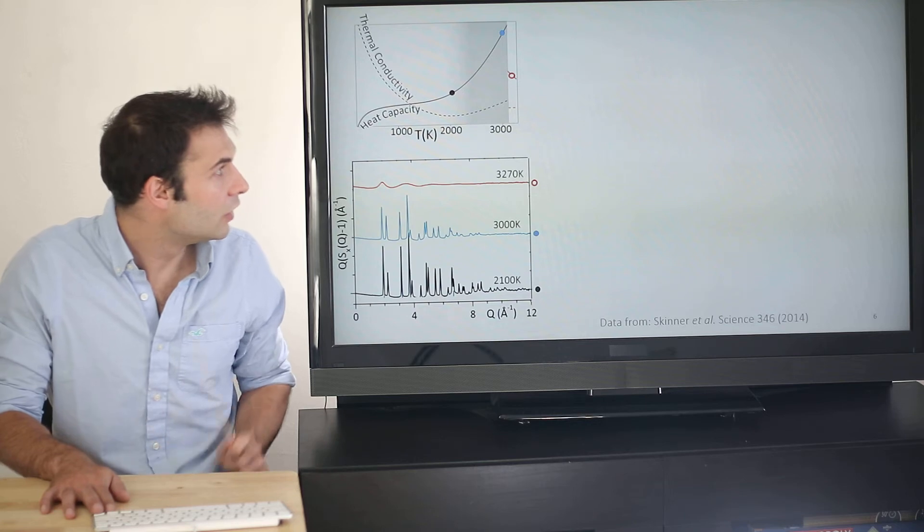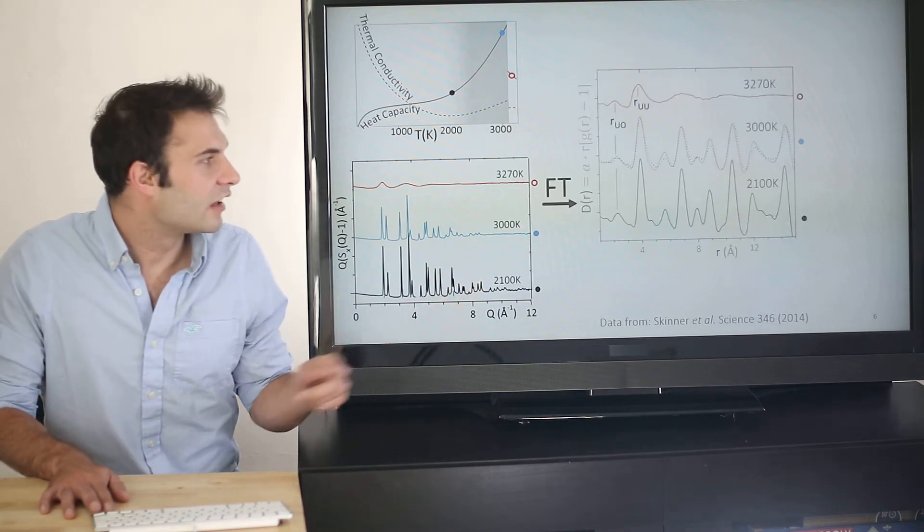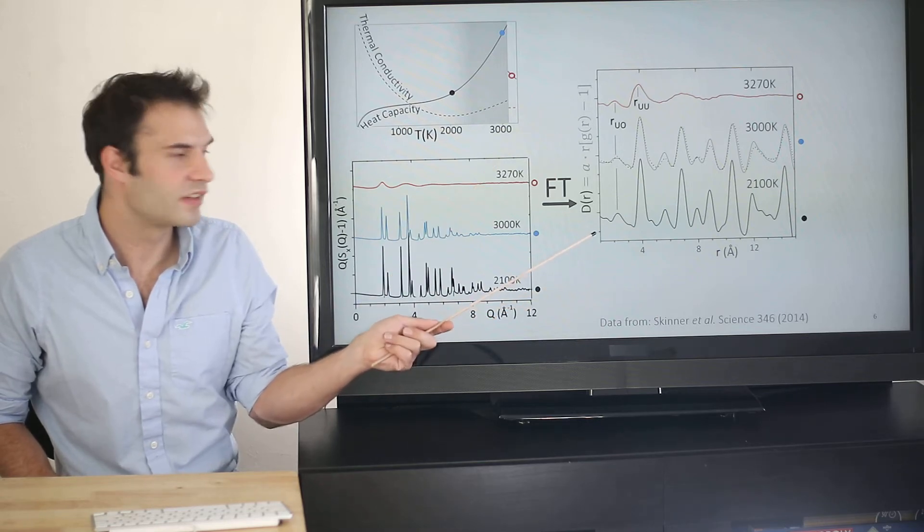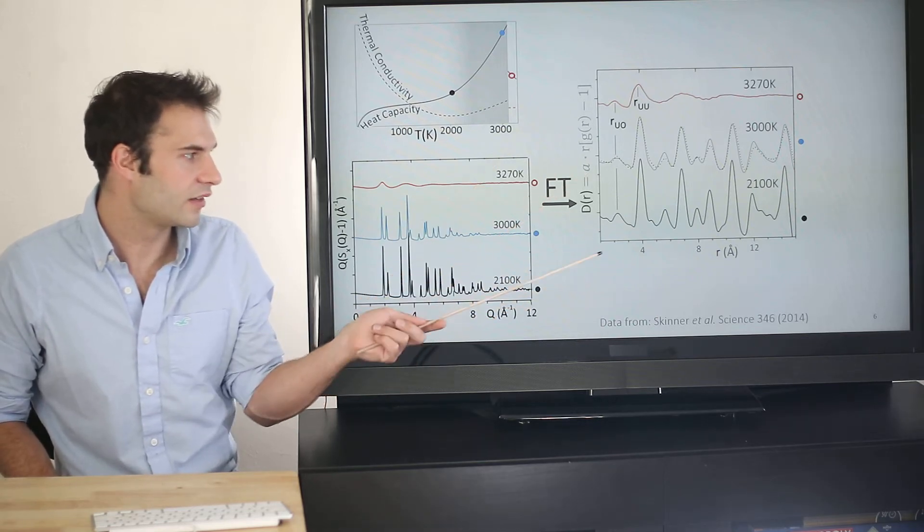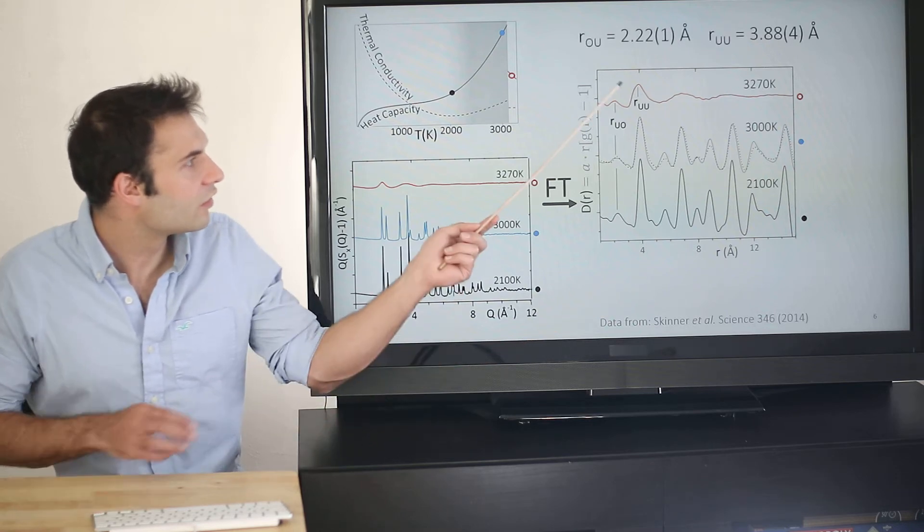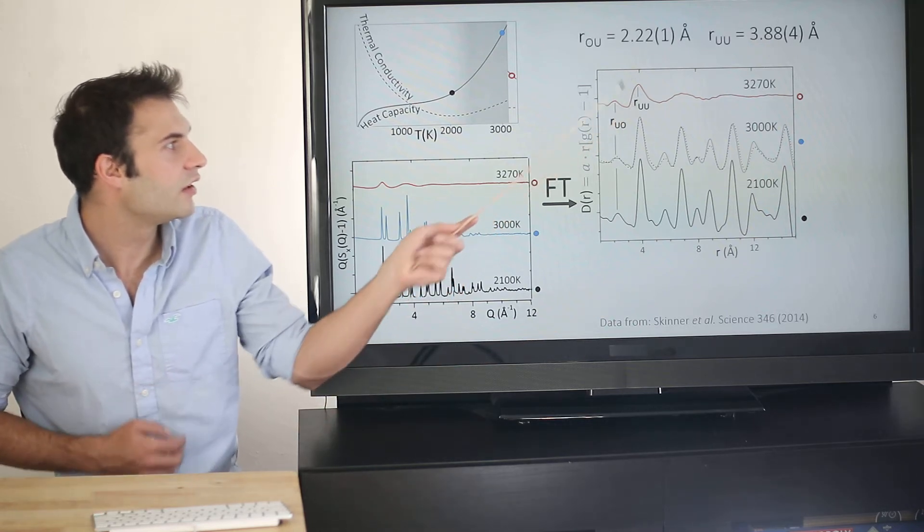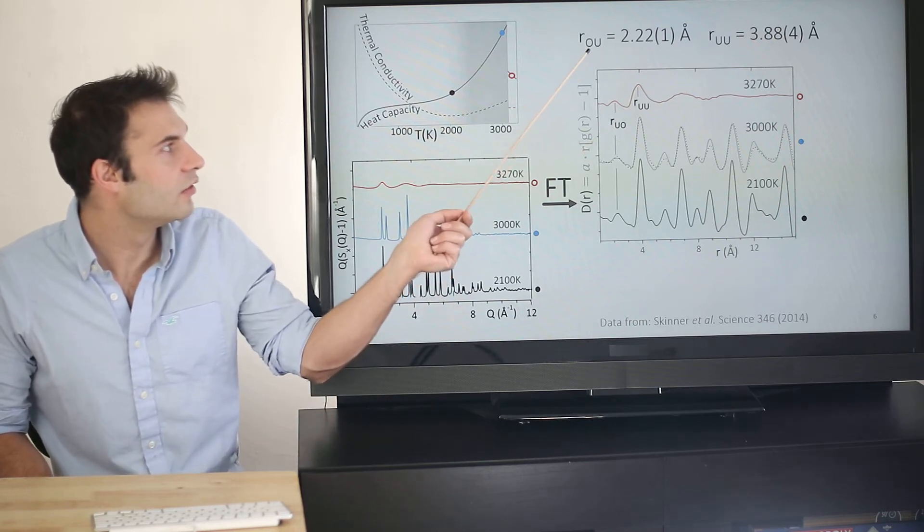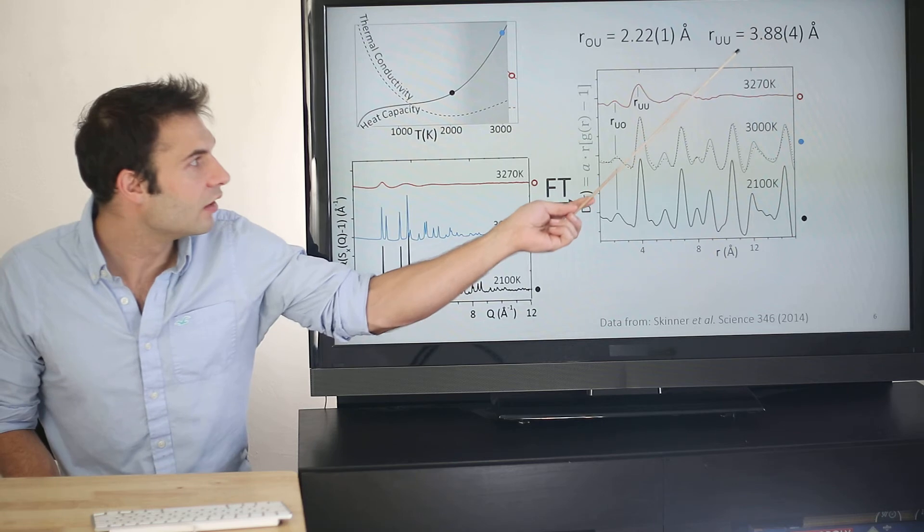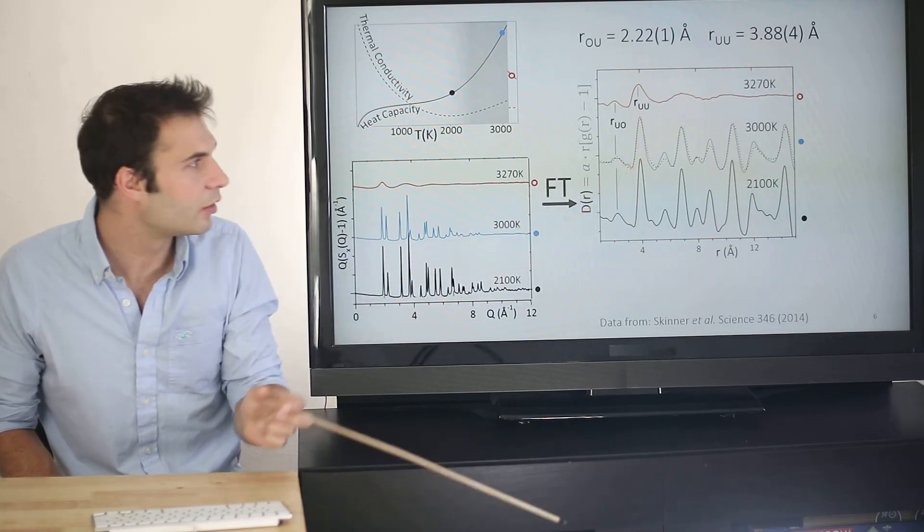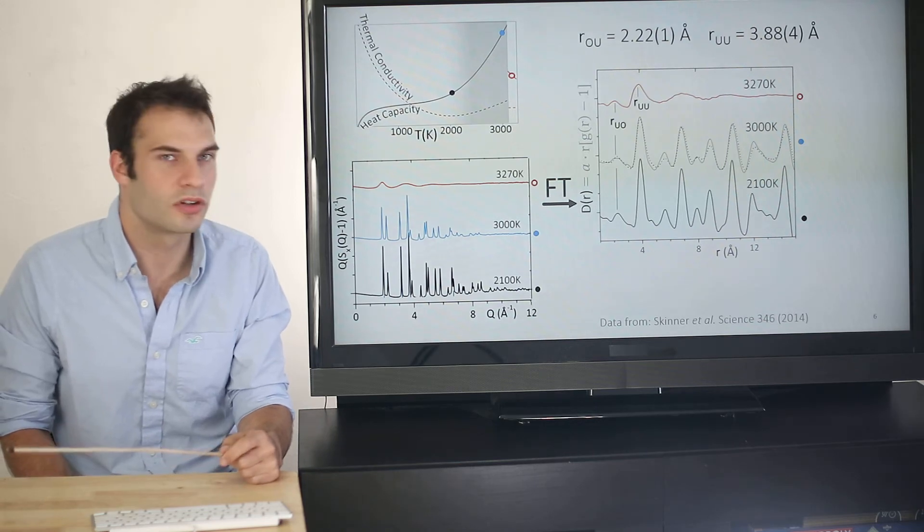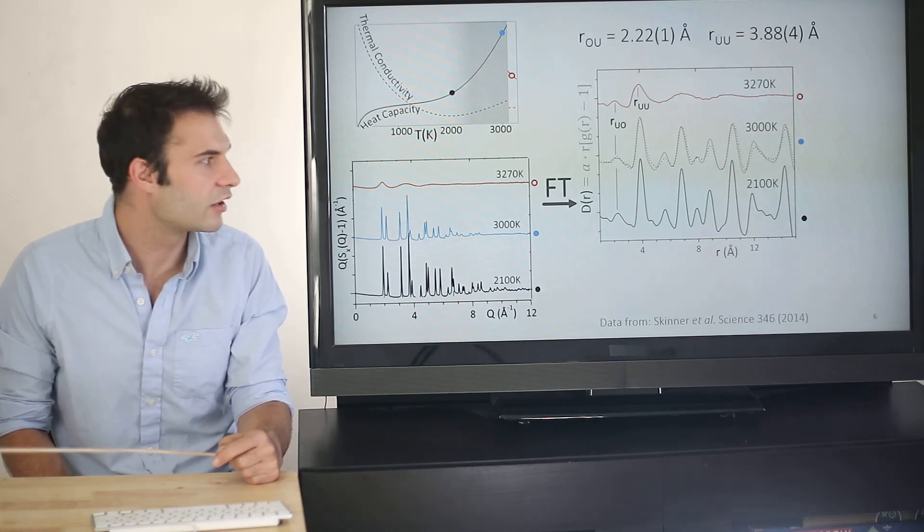We further transform these measurements. We get again our pair distribution functions. Although I've plotted D of R this time which is just R times G of R minus 1. It's still basically a probability of finding an atom on the y-axis against atomic separations on the x-axis. Just straight away we can see our first peaks. We get very precise uranium-oxygen bond length, 2.22 angstroms with an error 0.01. Similarly, we measured in the melt, 3.88 uranium-uranium separation, 3.88 angstroms with an error 0.04. We can use this to really narrow down the models that really describe accurately uranium dioxide.